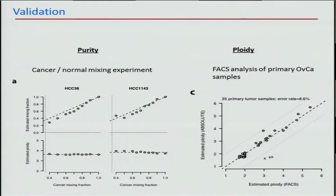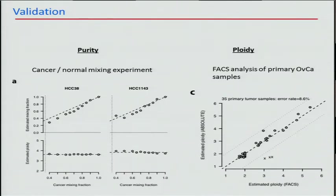To validate this, we've done several experiments. The purity validation is derived by mixing cancer and normal cell lines, running them on SNP arrays and getting back the correct mixing fraction. The ploidy analysis was done on some of the TCGA ovarian cancer primaries, where we actually performed FACS to estimate ploidy. It correlates quite well with our estimates, although there are a few samples that seem to have been misclassified.